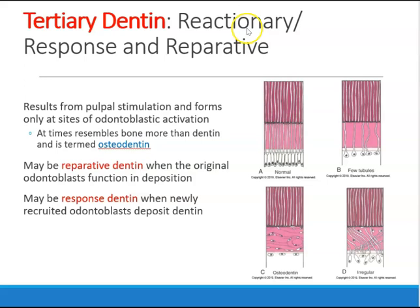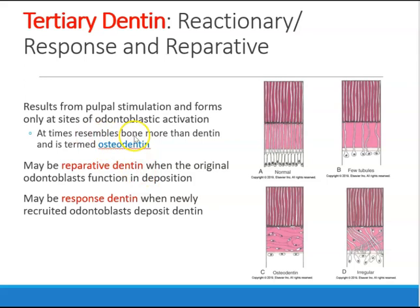Tertiary dentin occurs when there is trauma — cavities, caries, or aggressive tooth brushing. When tertiary dentin is deposited, it looks kind of like bone, which is why they call it osteodentin (osteo for bone). There are two types of tertiary dentin: reparative dentin and reactionary (response) dentin.